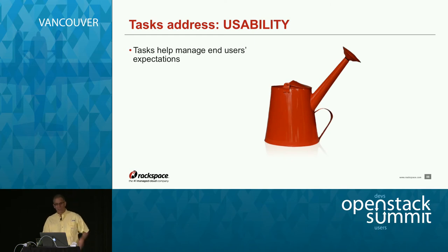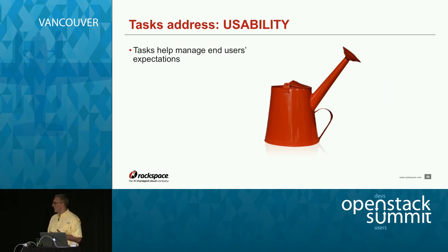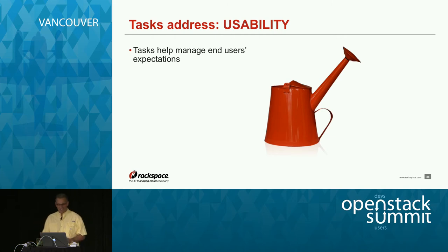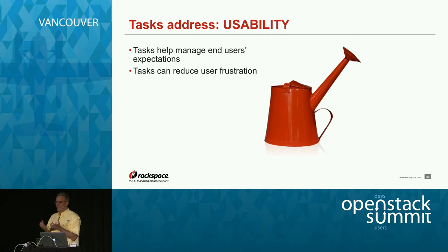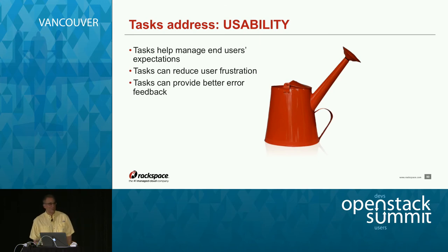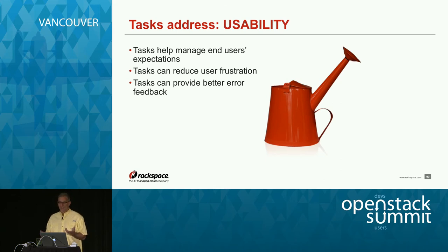With scalability, tasks allow you to process images asynchronously according to what resources you have available — some scanning might be CPU-intensive so you might not be able to do a lot at once. With usability, tasks help manage end users' expectations. Tasks can also reduce user frustration — at least if you do upload a JPEG, you're not booting 500 servers and calling support to find out why none of them booted. Tasks can provide better error feedback about what exactly is going on.